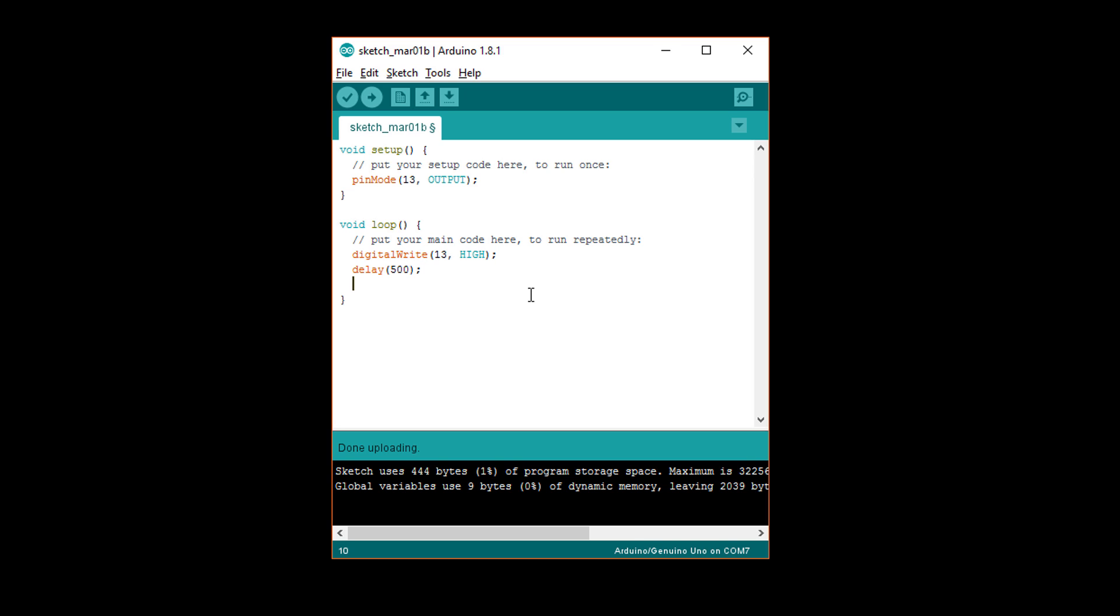To turn the LED off, we need to write digitalWrite with a capital W, open parentheses, 13, comma, space, LOW in all capital letters, close parentheses, semicolon, which has the effect of forcing the voltage on pin 13 to go to zero volts. That will stop any current flowing through the LED and turn it off.